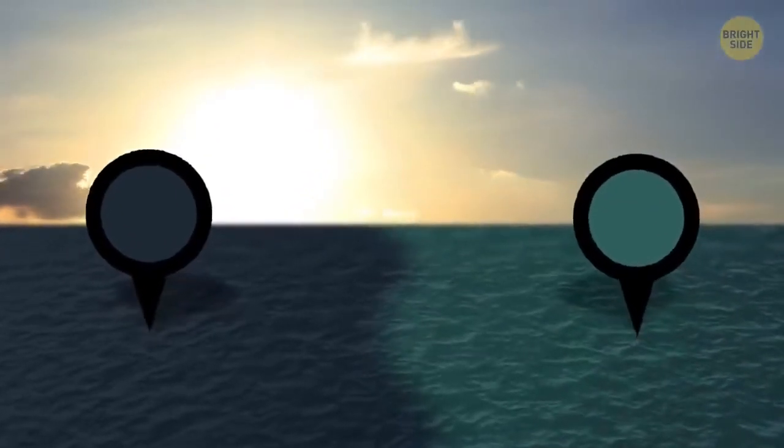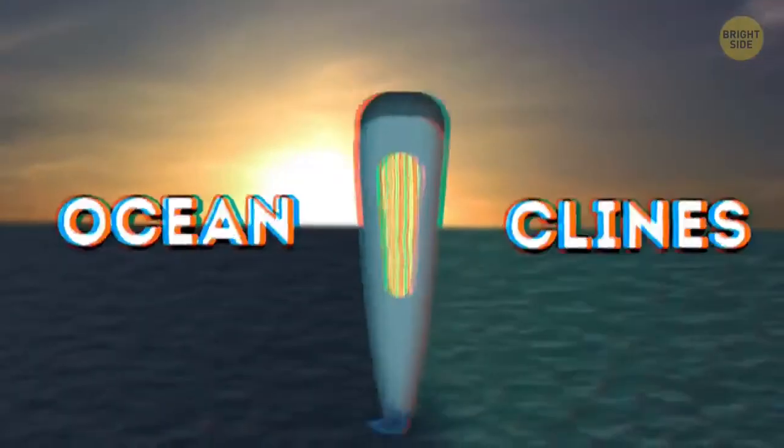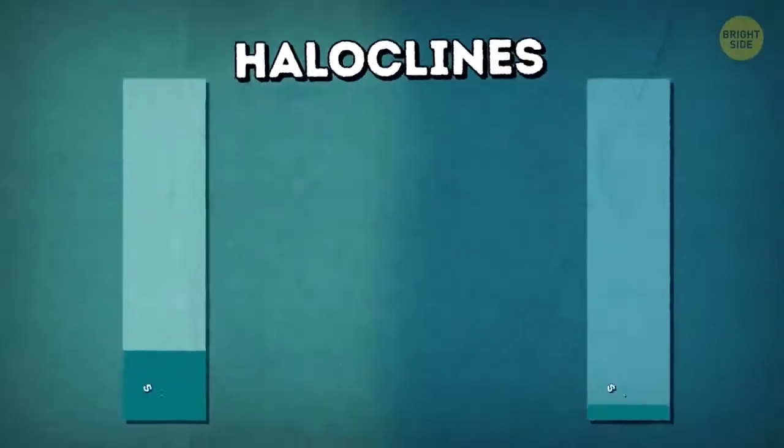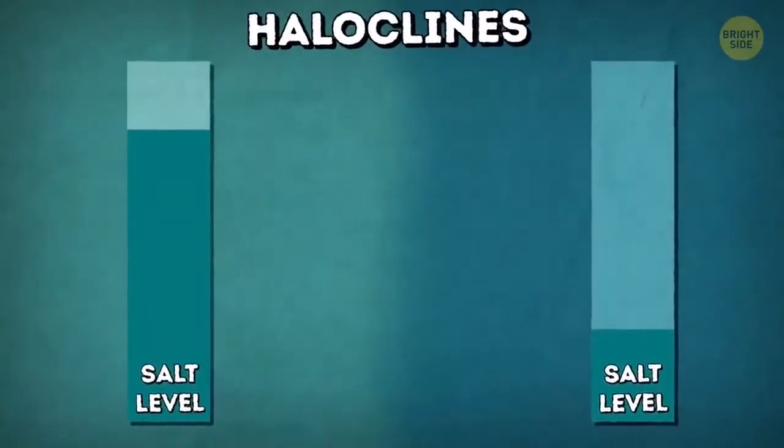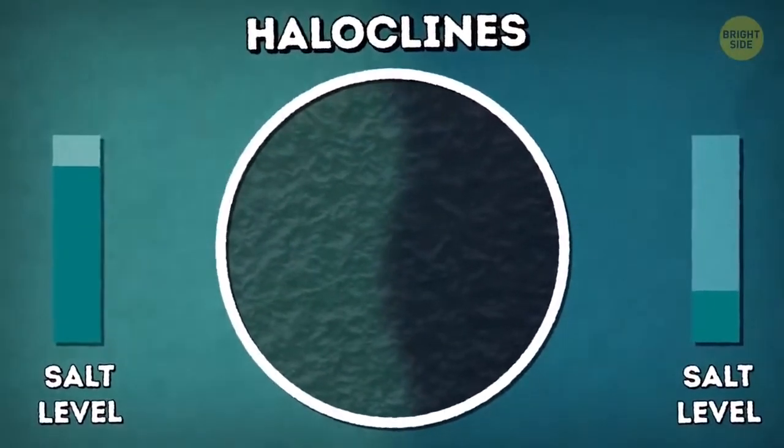The borders between the two bodies of water with different physical and biological characteristics are known as ocean clines. Haloclines, borders between waters with different salinity, are the most spectacular, and this is what we see when the Atlantic and Pacific oceans meet.